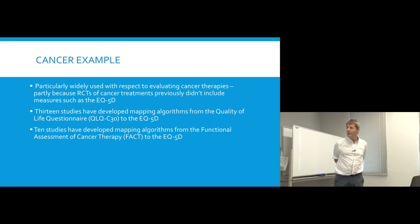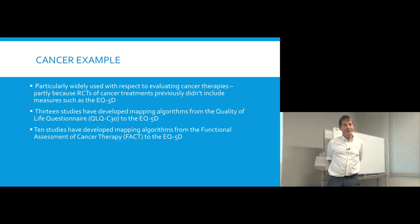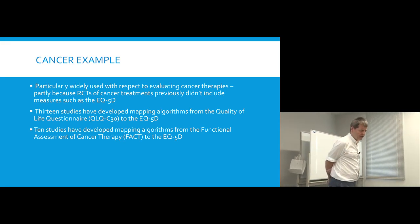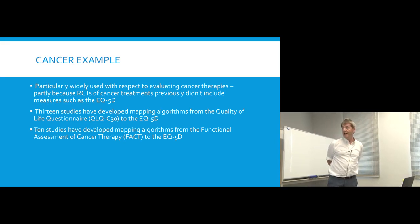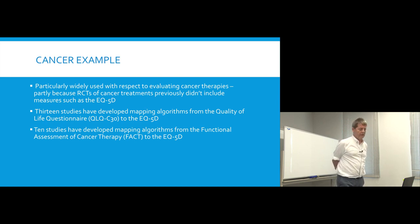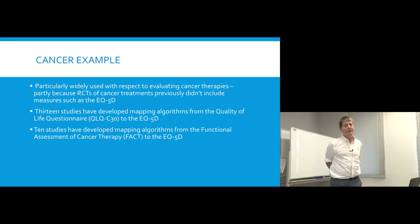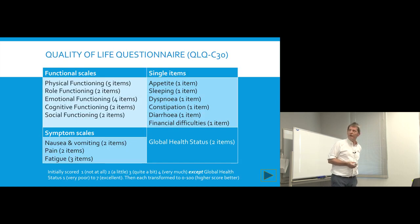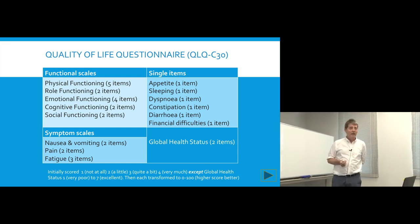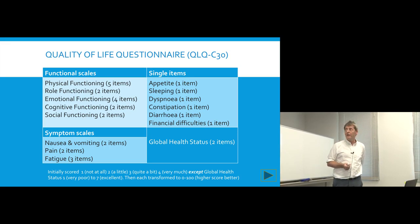That has now changed substantially and EQ5D is being collected. But no fewer than 13 different studies have developed mapping algorithms from a specific cancer measure, the QLQC30, to the EQ5D. And another cancer measure is the FACT, or Functional Assessment of Cancer Therapy, and there have been 10 different studies mapping from FACT measures to EQ5D. So it's been quite a cottage industry. The QLQC30 is very widely used in cancer studies, and the C30 refers to 'C' for core and 30 items.